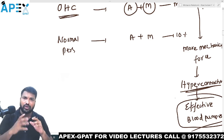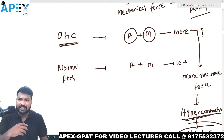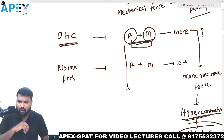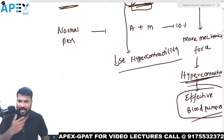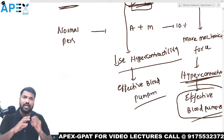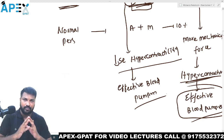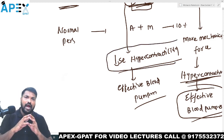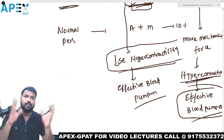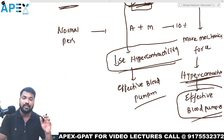If you want to treat this condition, we can decrease the actin-myosin interaction. When we decrease it, hypercontractility is reduced, and then you get effective blood pumping. By giving Mavacamten, we decrease hypercontractility and achieve effective blood pumping and proper blood supply all over the body. That is the drug Mavacamten.